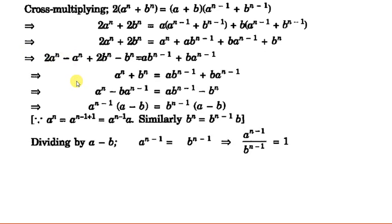After expanding and transposing like terms, we get: a^n plus b^n equals ab^(n-1) plus ba^(n-1). Transposing further, we take a^(n-1) common from the left side, leaving (a minus b), and take b^(n-1) common from the right side, also leaving (a minus b).